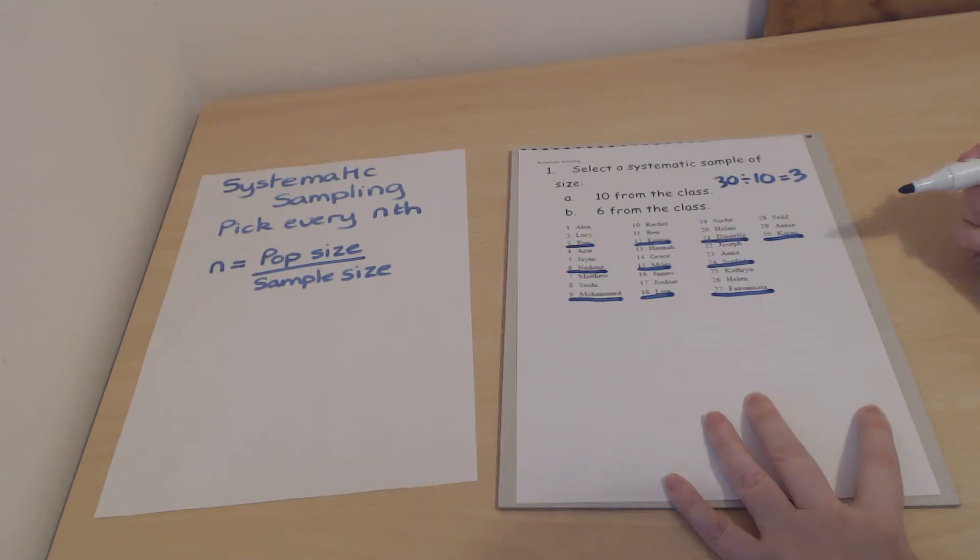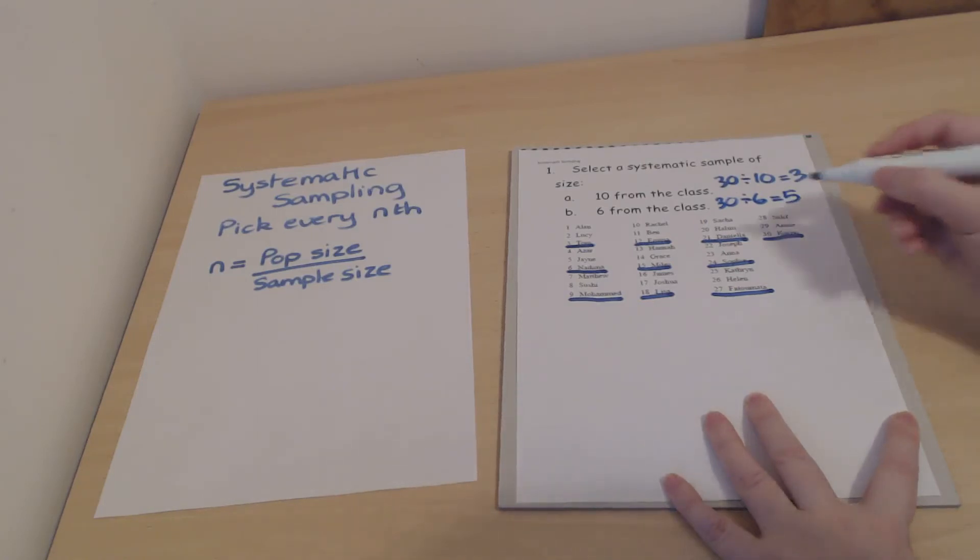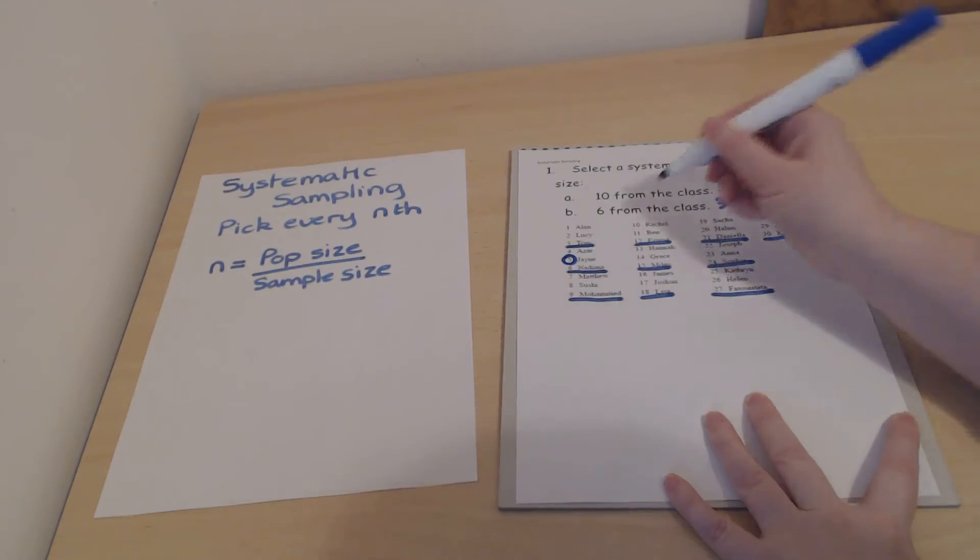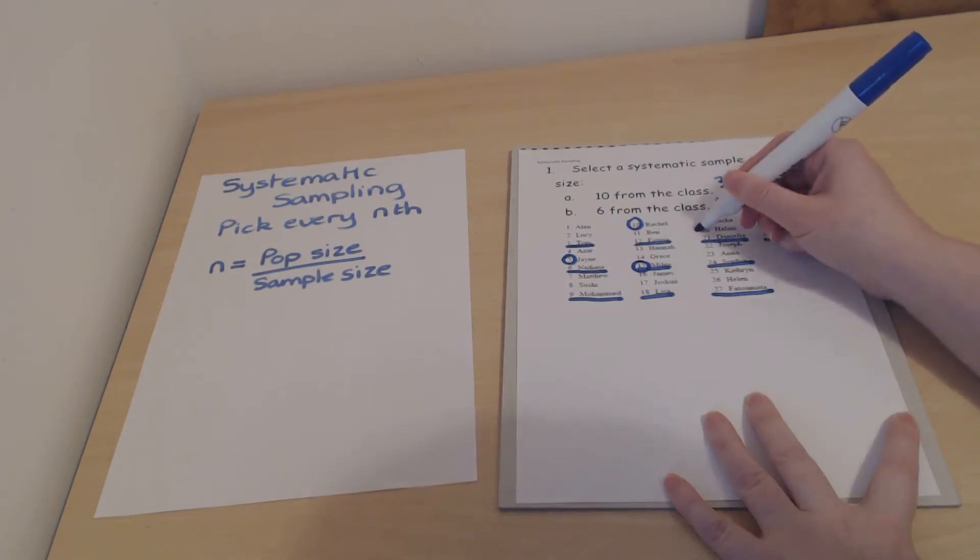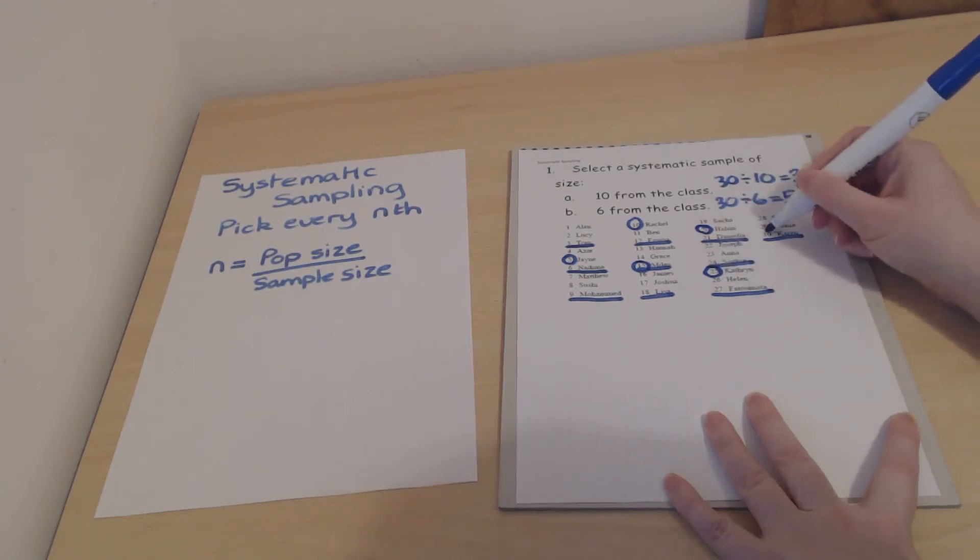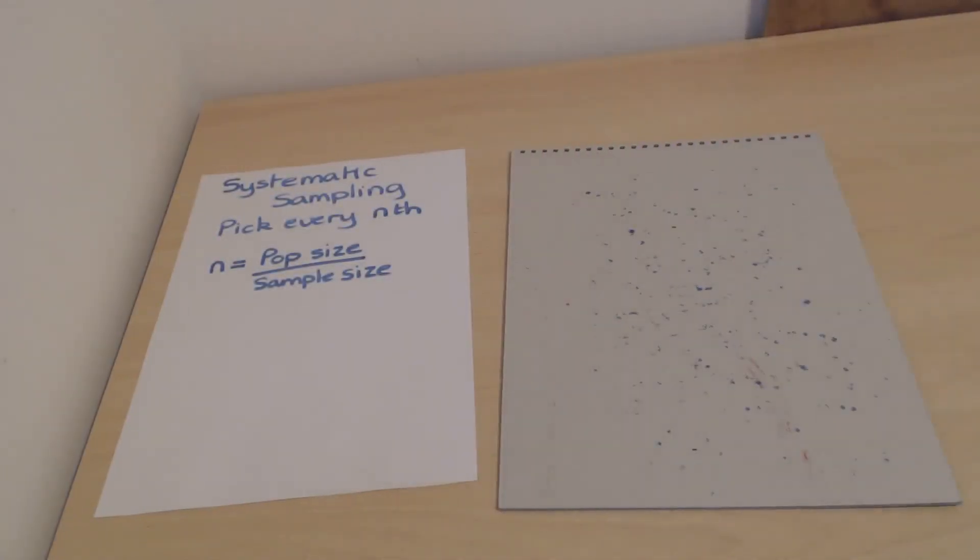That's 1, 2, 3, 4, 5, 6, 7, 8, 9, 10 in our sample. If we actually only wanted a sample of 6, then we do 30 divided by 6, which gives us 5. So we'd pick every fifth person—Jane, Rachel, Miles, Halim, Katherine, and Karen. That's 1, 2, 3, 4, 5, 6. So it's pretty straightforward, isn't it?